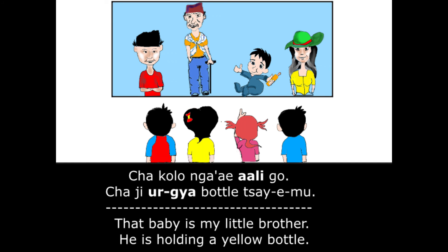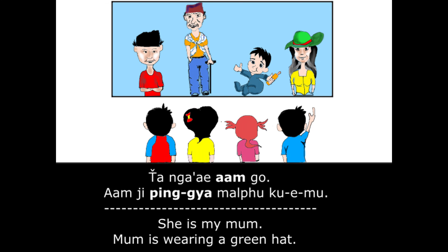Cho Kolo Ngai Ali Go. Cho Ji Urgya Bottle Khe Mu. That baby is my little brother. He is holding a yellow bottle. To Ngai Amgo. Amji Bhingya Malkhu Kwe Mu. She is my mom. Mom is wearing a green hat.